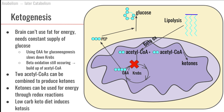Running out of oxaloacetate is going to really slow down the Krebs cycle. If the Krebs cycle slows down, there's going to be no oxaloacetate available to accept the acetyl-CoA so it can go through the Krebs cycle and reduce compounds in order to generate energy.